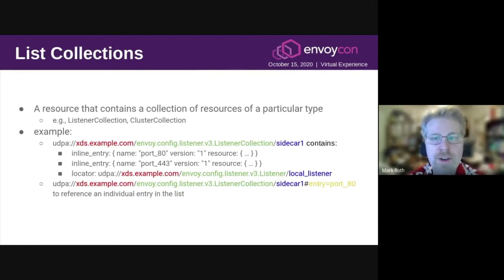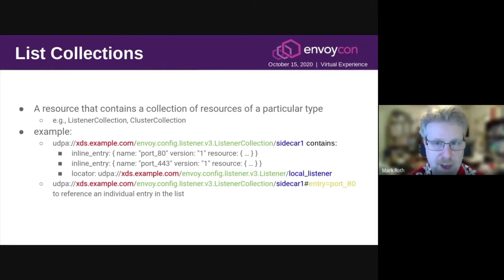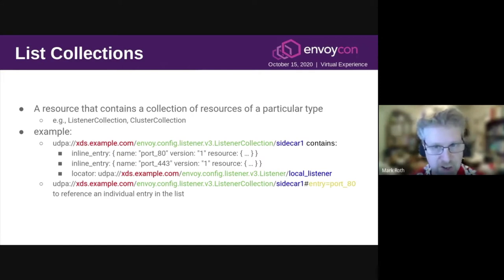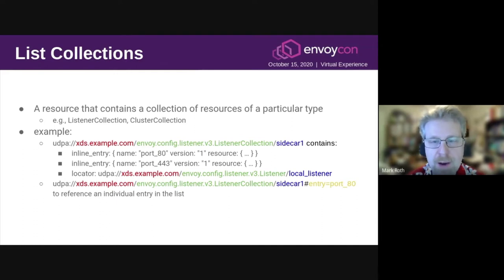Another thing that we're introducing is first-class support for collections. There are two types of collections: list collections and glob collections. A list collection is a resource that contains a collection of resources of a particular type. The collection resource itself will have its own type — for example, a resource of type listener-collection contains a collection of listeners, and a resource of type cluster-collection contains a collection of clusters. This is another key part of replacing the wildcard queries for LDS and CDS. Each resource in a collection can be either an inlined resource or a UDPA URI referring to another resource which the client must fetch separately.